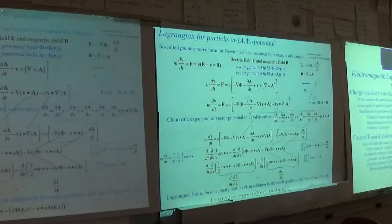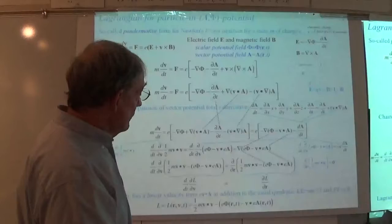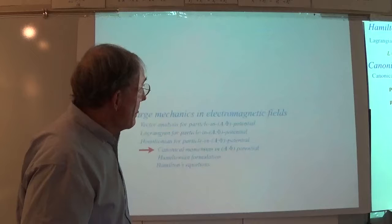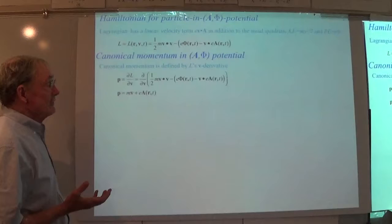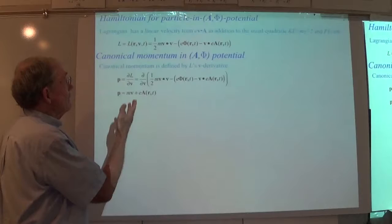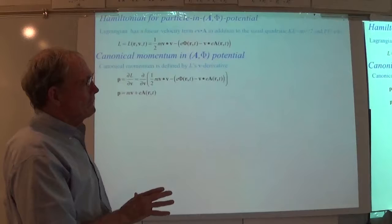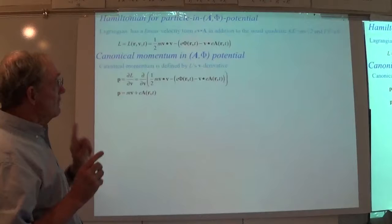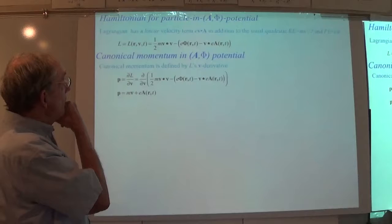We still have one more step to go: making a Hamiltonian out of this. This is a very nice Lagrangian, but what do we do? We've got to figure out what the canonical momentum is. Not too long ago I saw in PRL — Physical Review Letters — someone claiming this Hamiltonian is wrong. It was completely garbage but it got into PRL. So even to this day we're still fussing about these things.